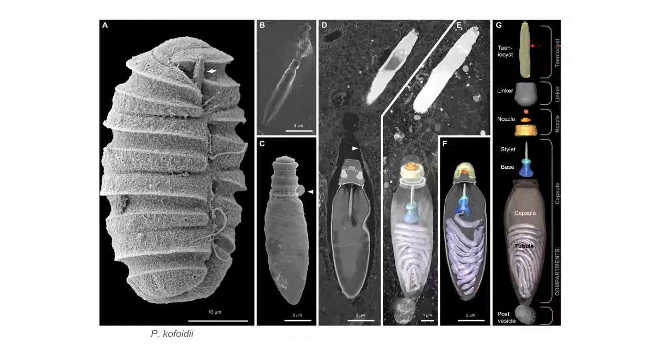Sitting between this taniocyst and this capsule is this linker. The function of this linker isn't very well elucidated, but it does serve to suggest that this taniocyst and this capsule, these two ballistic organelle components, are coupled in some way.